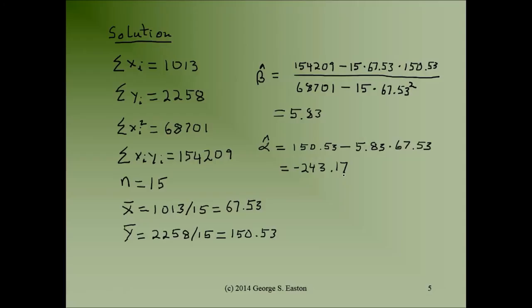This concludes the demonstration of how to compute the simple regression coefficients beta hat and alpha hat from a table that gives you not only the data points x and y, but the cross products x_i times y_i summed up, and the x_i squareds as well. You can stop here if all you're interested in is how to compute those. I'm going to continue and show you where the second formula for the regression slope coefficient comes from.